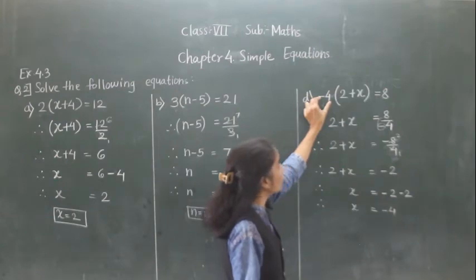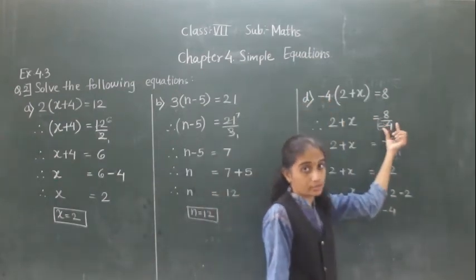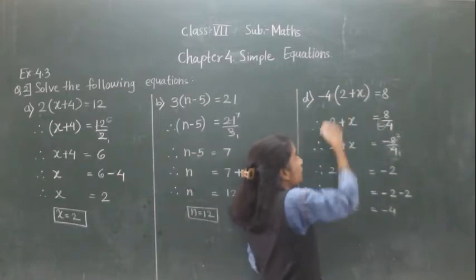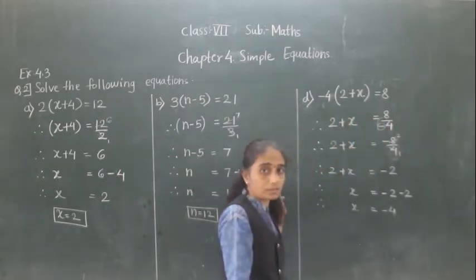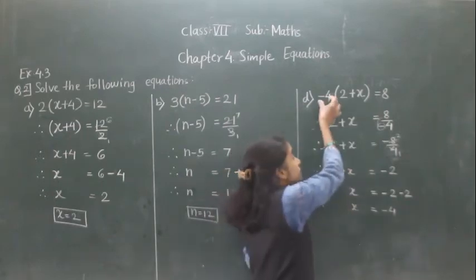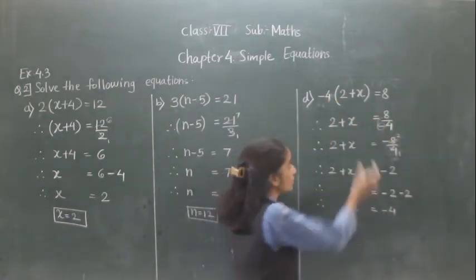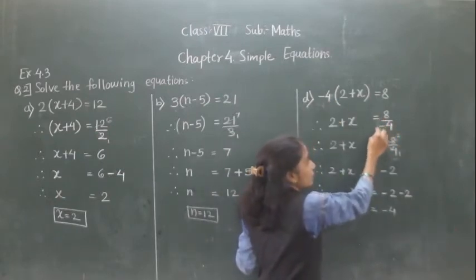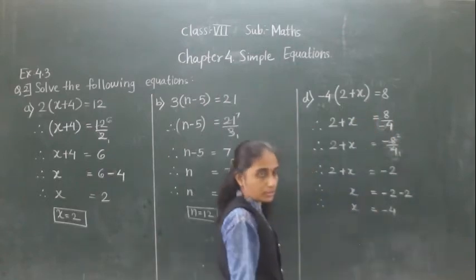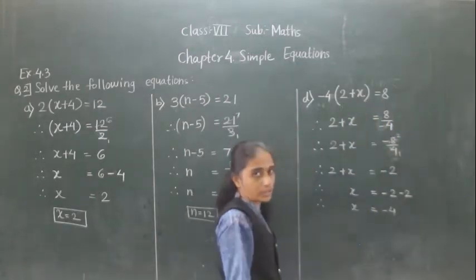Since it is multiplication, we transfer this number to the other side and divide. Here it is multiplied; if it comes to this side it will become divide. So we divide the right hand side by minus 4. We can move this denominator to the numerator.